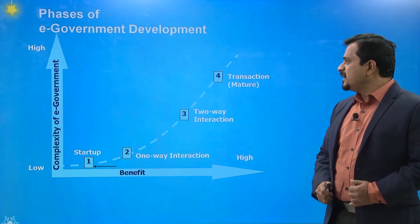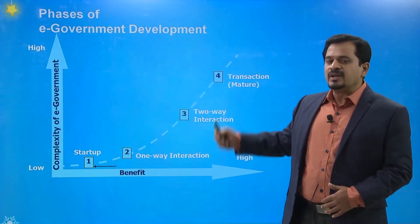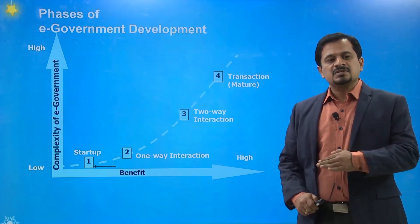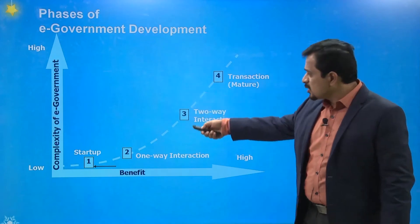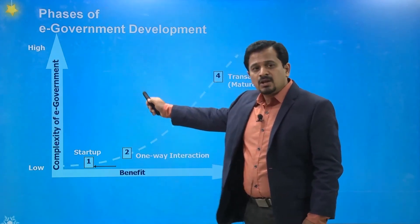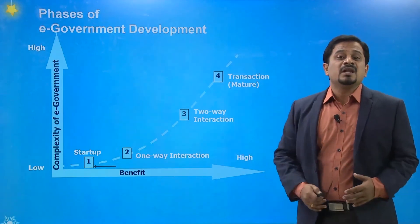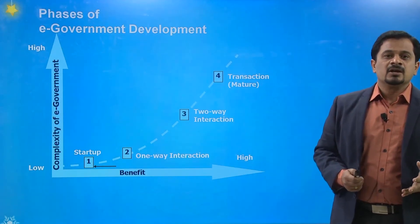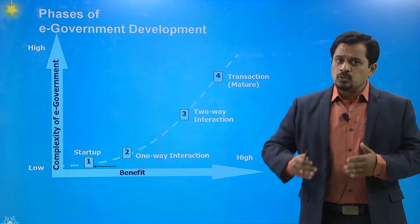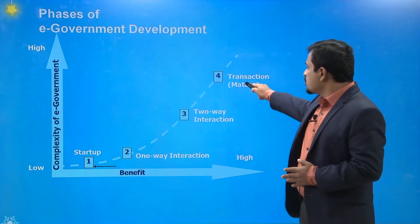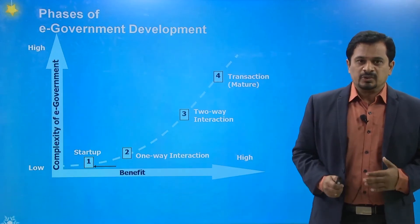The phases of e-government development — looking at benefit versus complexity: the x-axis represents benefits and the y-axis is complexity. If the complexity level increases, then automatically the benefits also grow exponentially. It starts from start-up to one-way interaction to two-way interaction. At last, it reaches a high-level maturity stage where financial transactions are possible.